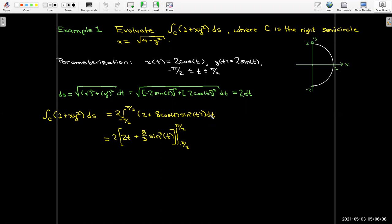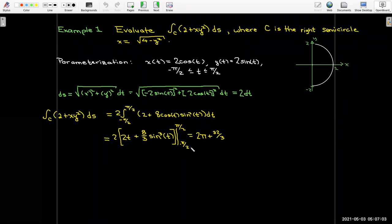The antiderivative of 2 is 2t. The antiderivative of sin^2(t)cos(t), I'll just use a u substitution. That would be (1/3)sin^3(t) multiplied times 8. And we'll evaluate that from -π/2 to π/2. And that works out to be 2π + 32/3.